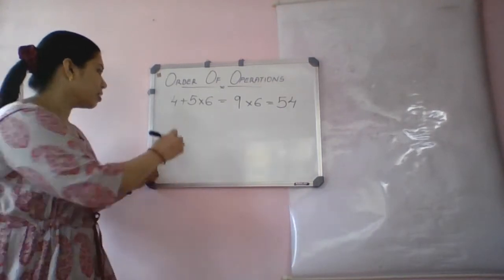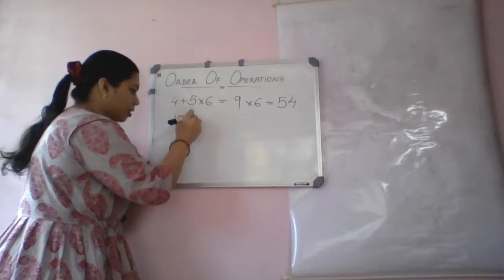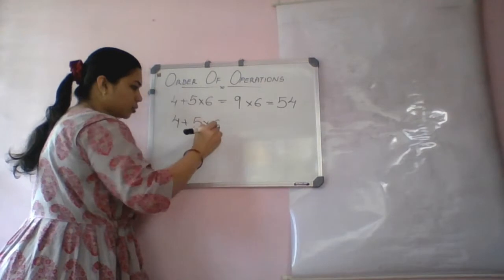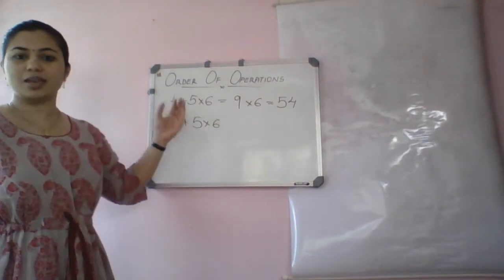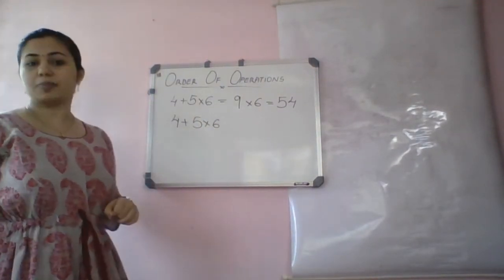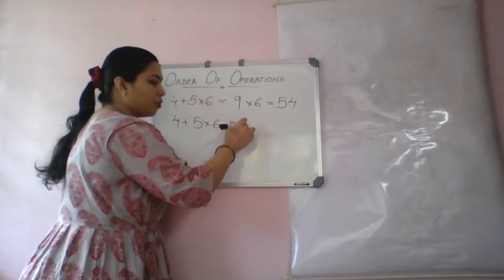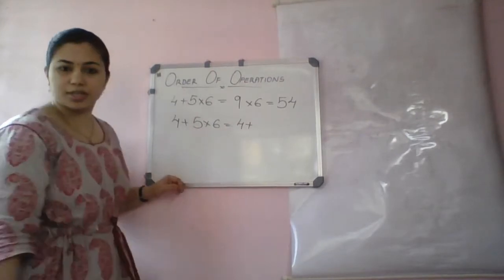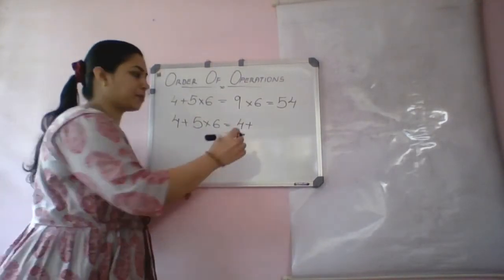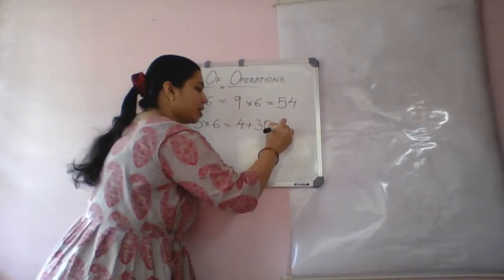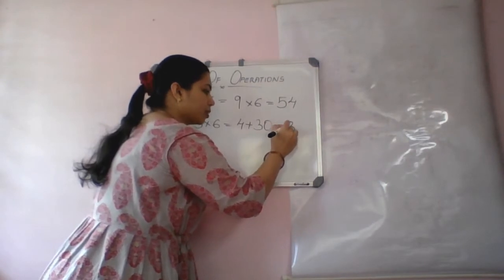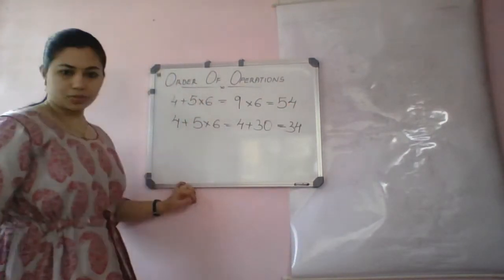Okay. I am going to show a question. 4 plus 5 into 6. Again, the same question. I am going to do multiplication. So, this is 4 plus 5 into 6. How do I do? 30. So, 4 plus 30 will give you 34.